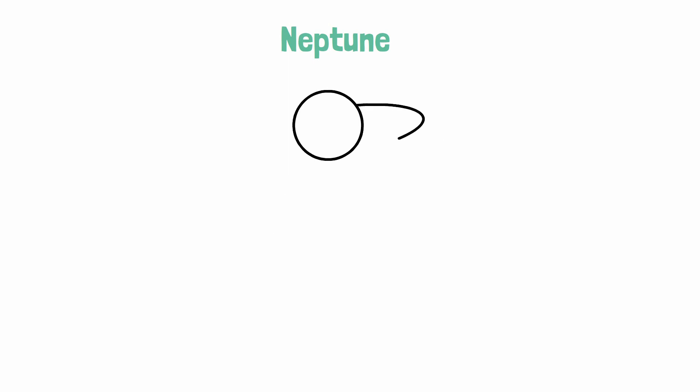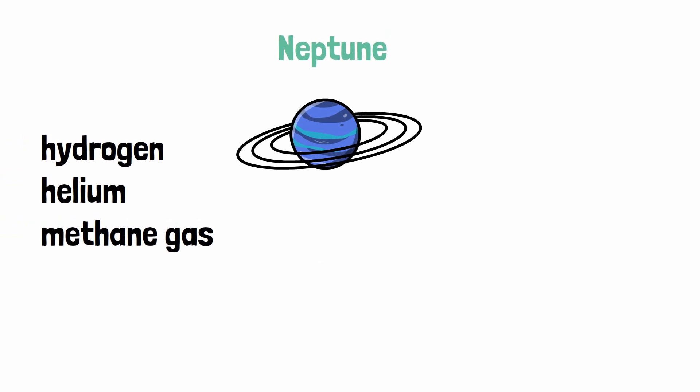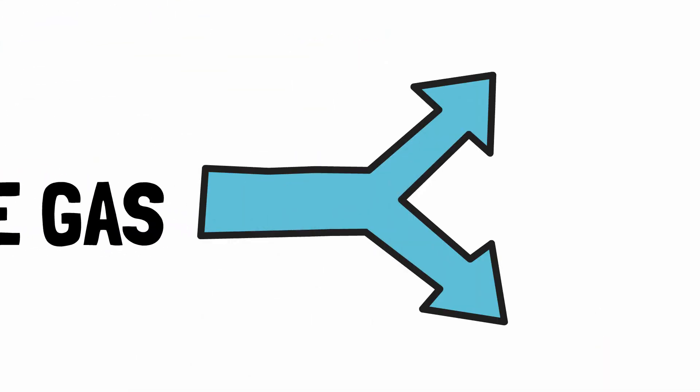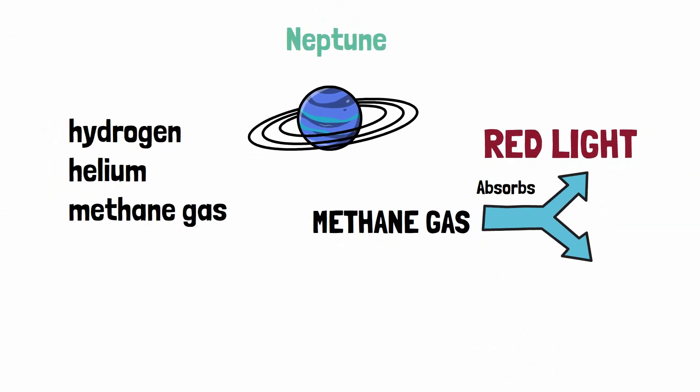Neptune's atmosphere is also made up of hydrogen and helium, but much like Uranus, Neptune also possesses methane gas in its atmosphere. Neptune, therefore, also appears as blue. Methane gas in the atmosphere absorbs red light and reflects only blue.